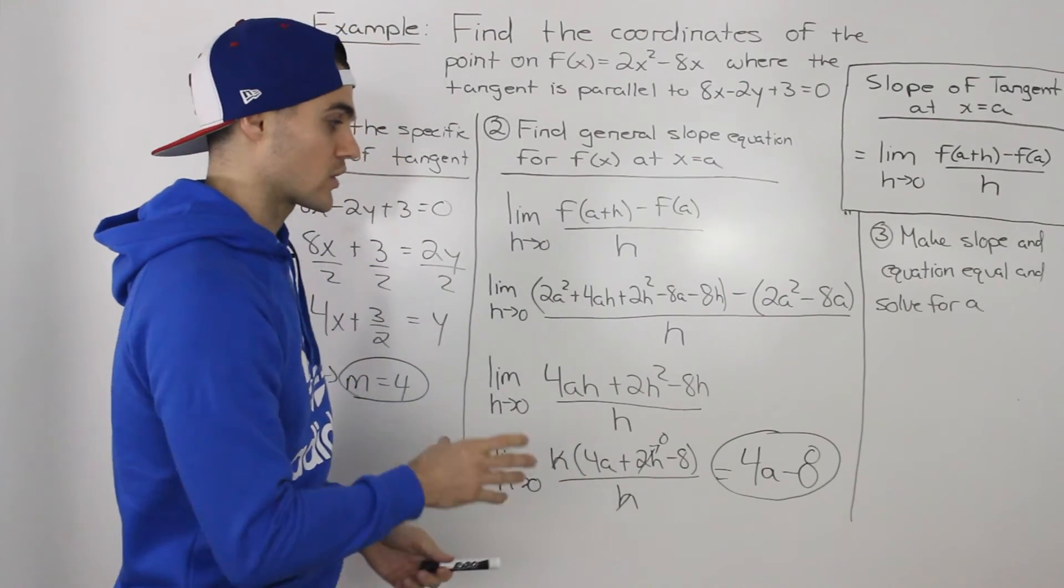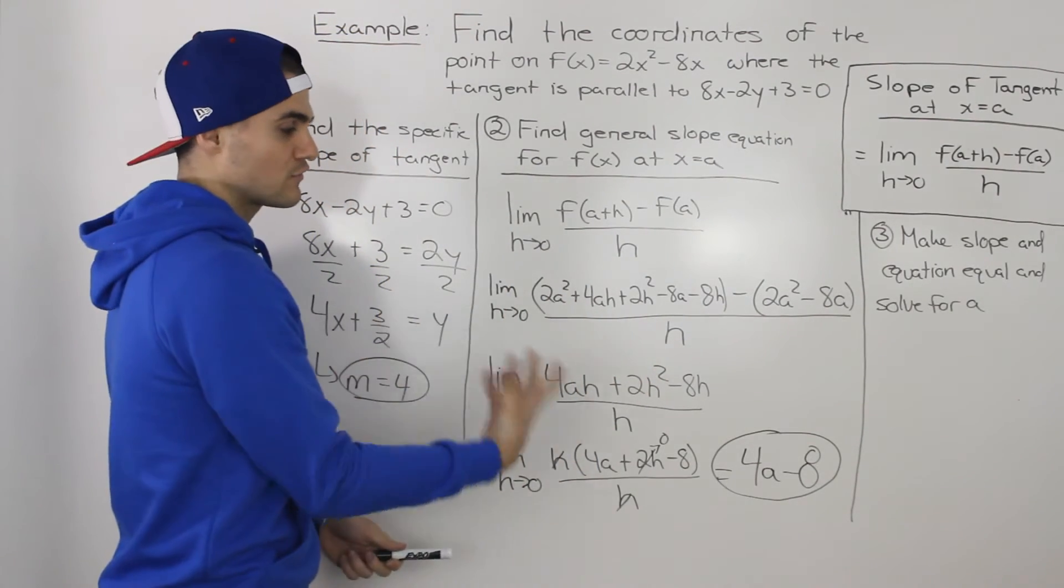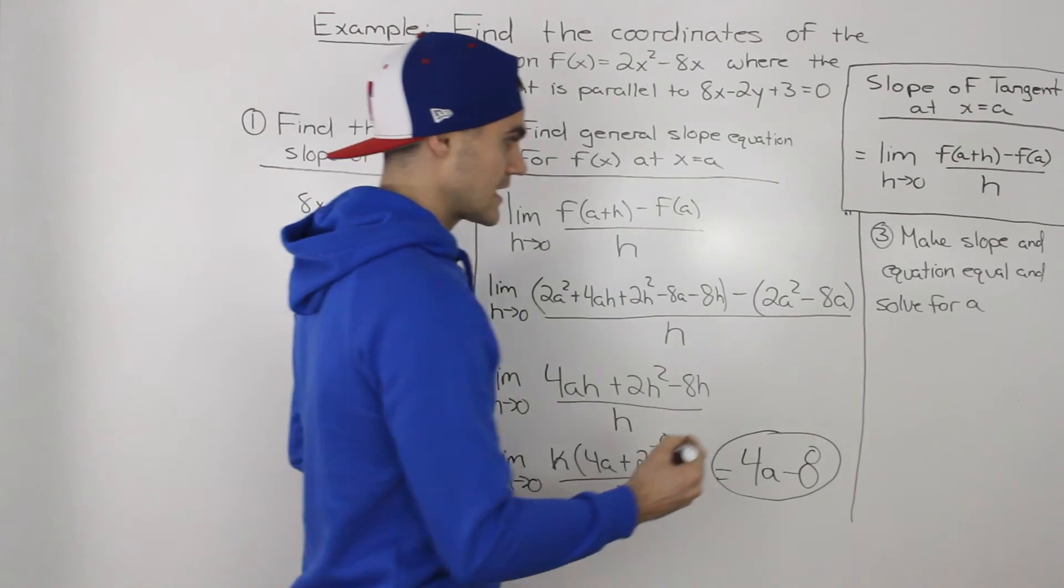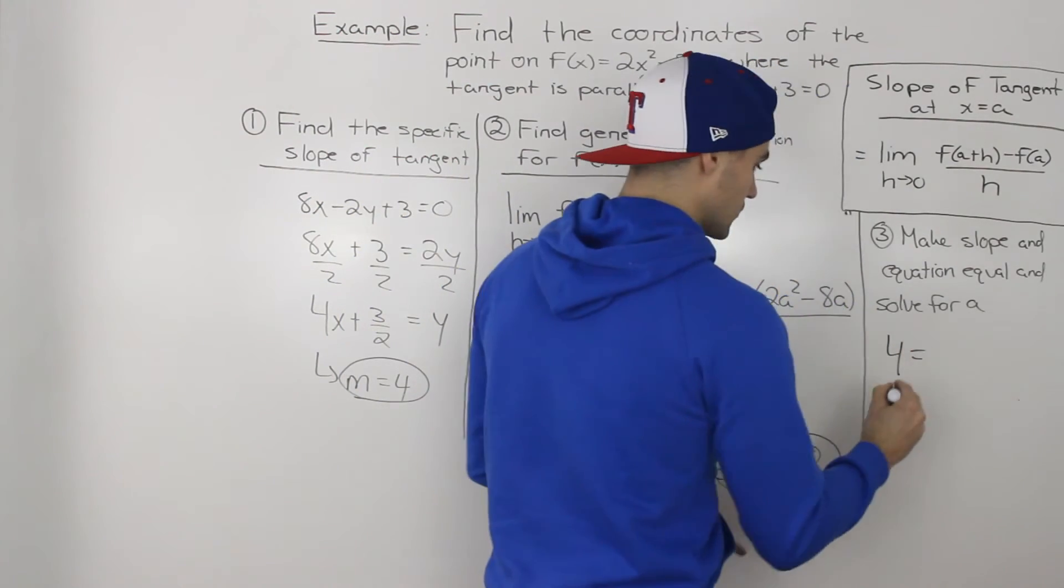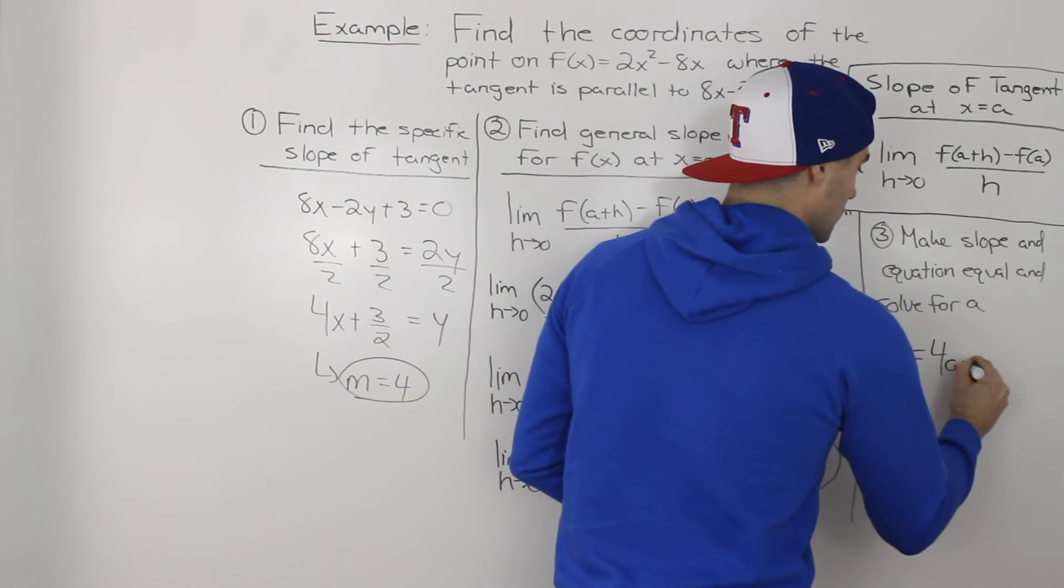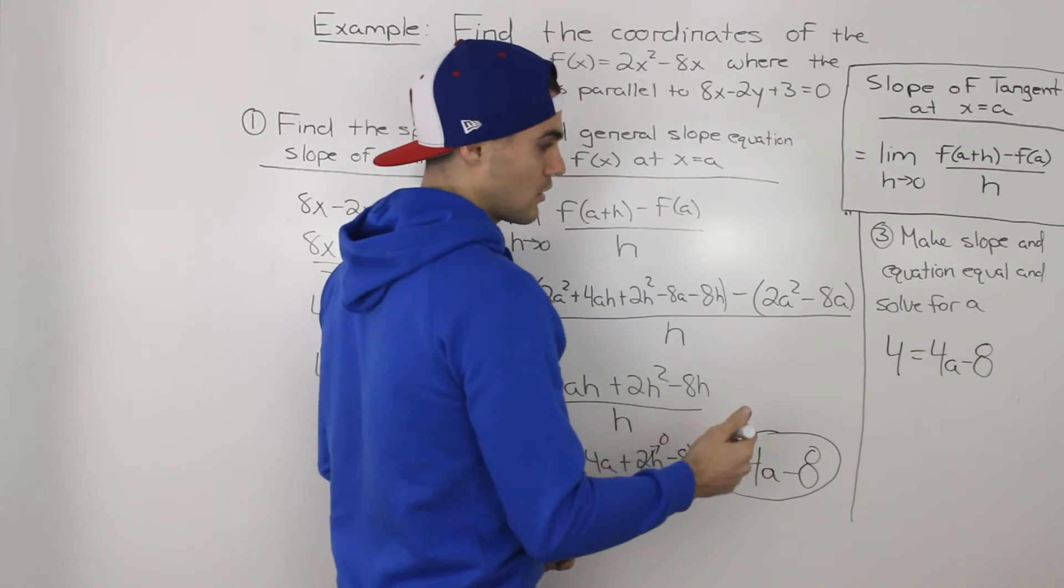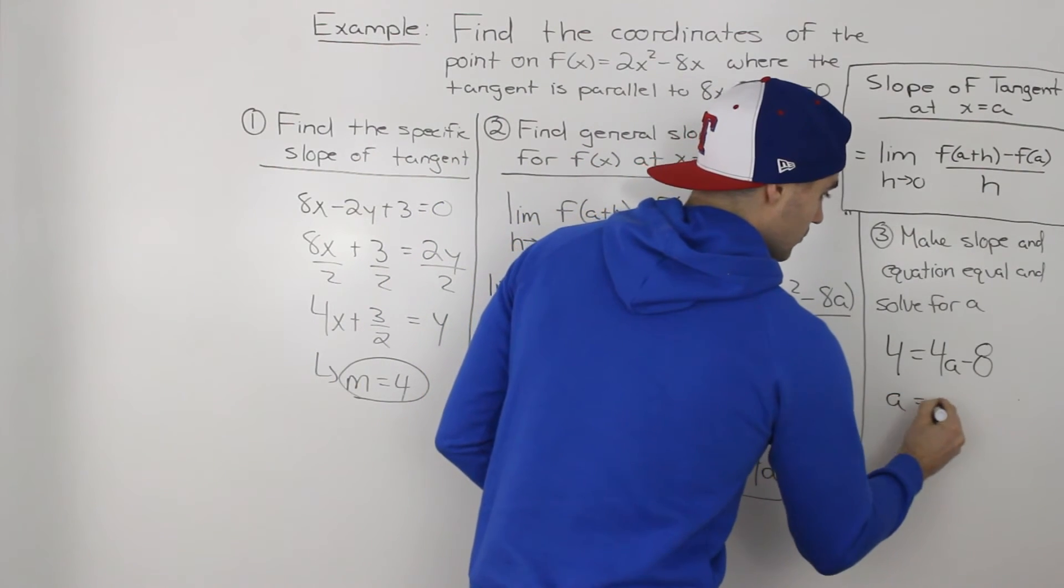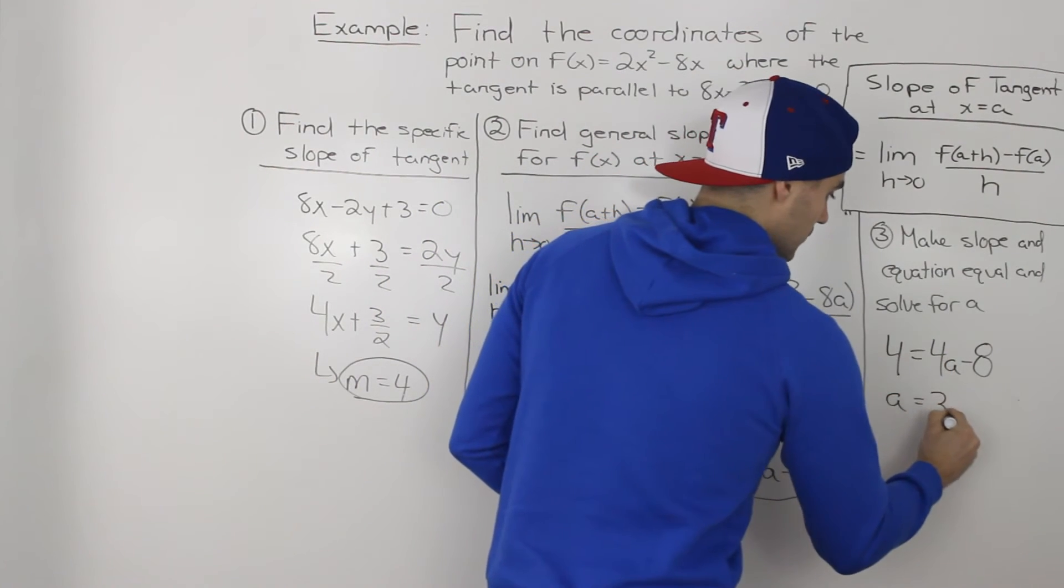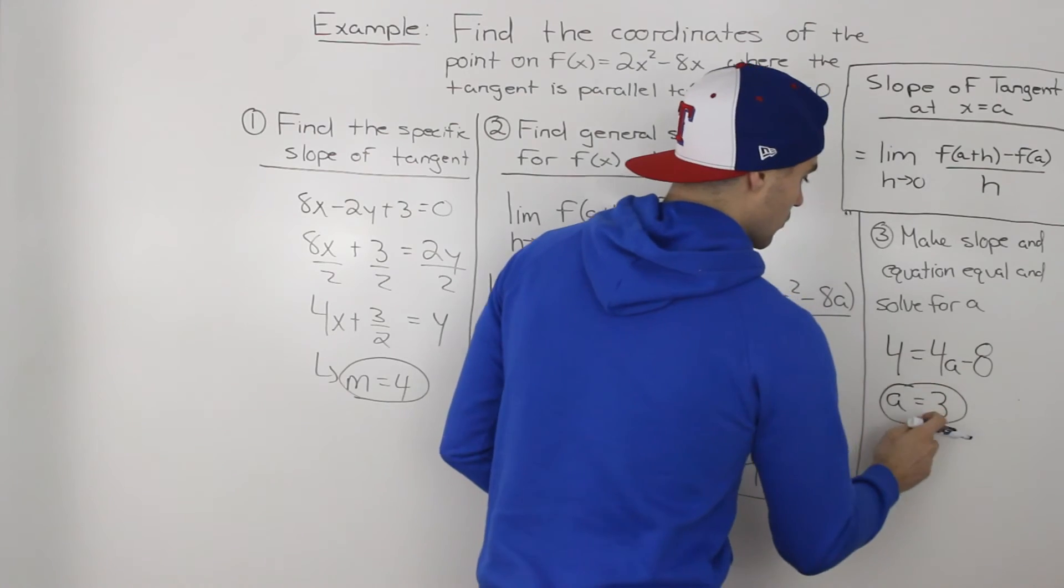In this case, we're given the slope of the tangent, and we have to find the coordinate. So we would take that slope, 4, and make it equal to that general formula that we got, 4a - 8. And then when we solve for a, we would bring the -8 over, and then we would get a = 3.